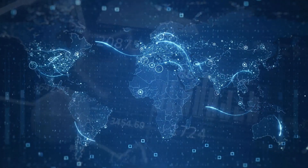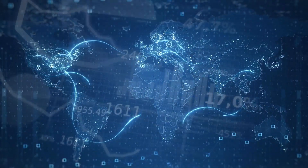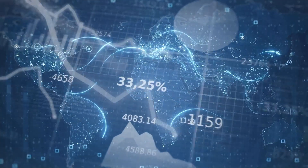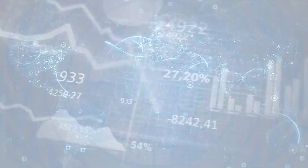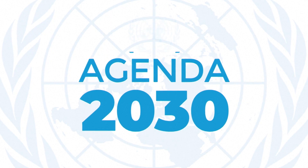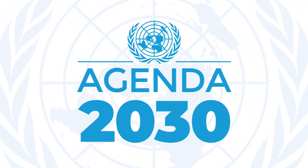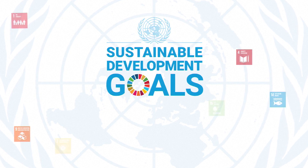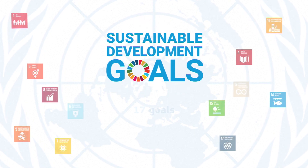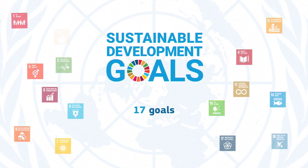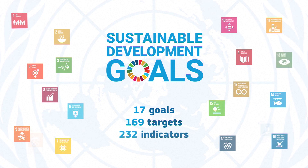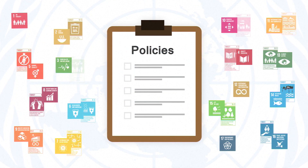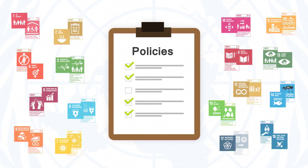Countries around the world are facing huge challenges to develop their economies and societies in a sustainable way. The 2030 agenda set by the United Nations offers them a roadmap to guide their actions. However, considering the agenda's complexity with its 17 sustainable development goals and its numerous targets and indicators, it can be difficult for policymakers to prioritize efforts.